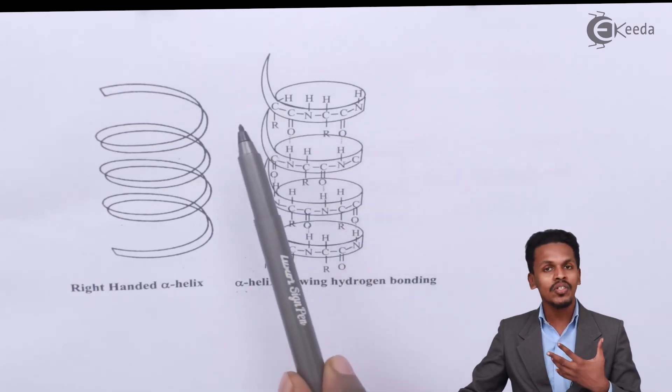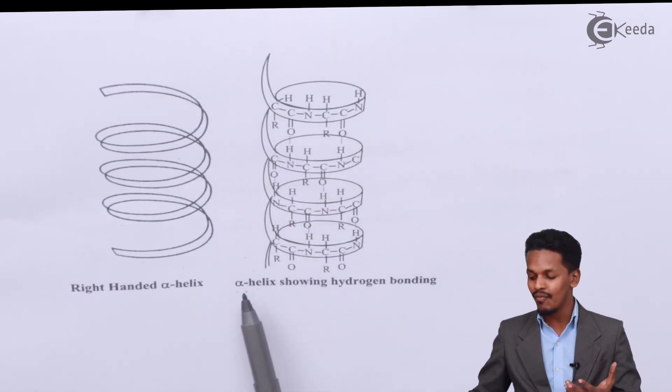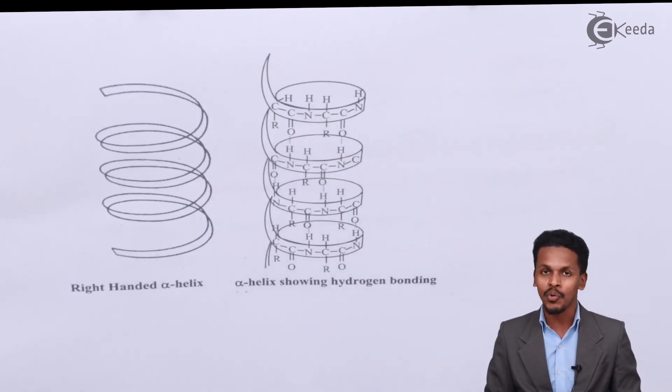Because of this nature or property they get coiled up in such a way and that's the reason they are known as alpha helix. Here we can see the hydrogen bonding and that occurs in this kind of structure only.